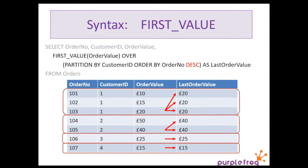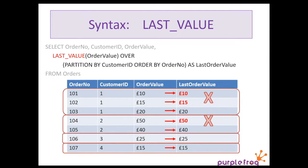Let's move on. If we wanted to get the last value, then we can either use the first value function but instead of ordering it by the order number ascending, we order by order number descending. That then reverses the order and we get the last value in every single row. Now, instead of using first value, there is actually a built-in last value function, which we would have thought would be great to use. But this is where we get our first major gotcha. If we just use last value on its own, partitioned by the customer ID and customer number, then we get the wrong values — instead of taking this value of 20 and using it for every single row, it doesn't. It just replicates the same value across.